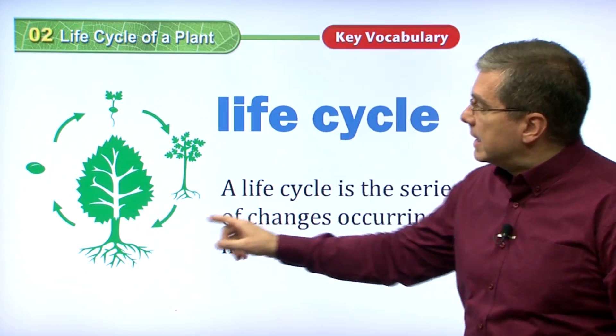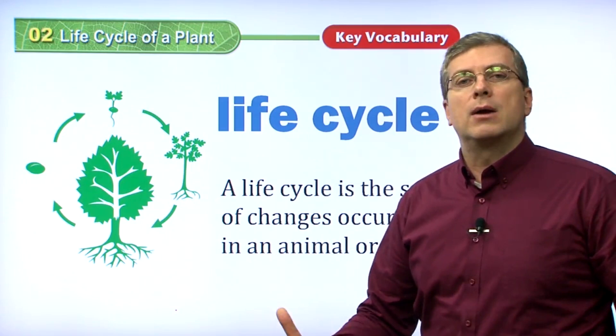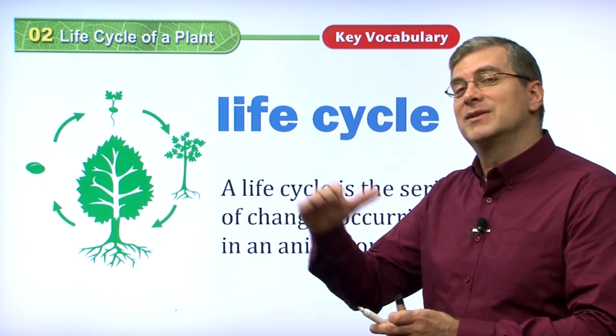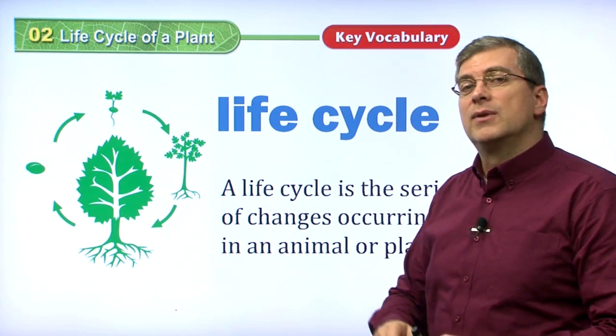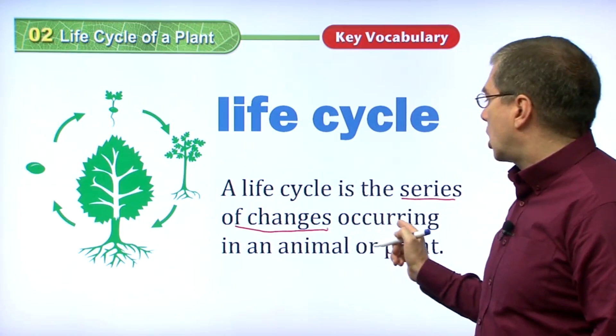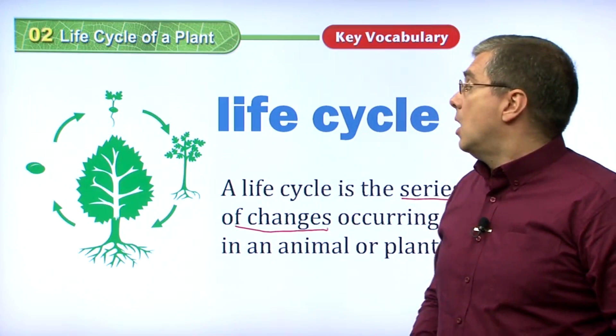Here we see the life cycle. The life cycle is the cycle of life. It's how something grows into an adult, then dies, and then comes back and grows again. Life all around us is going through this cycle. We can see examples of babies, teenagers, the middle part of a life, and then things that die. This is all part of the life cycle — the series of changes occurring in an animal or plant.